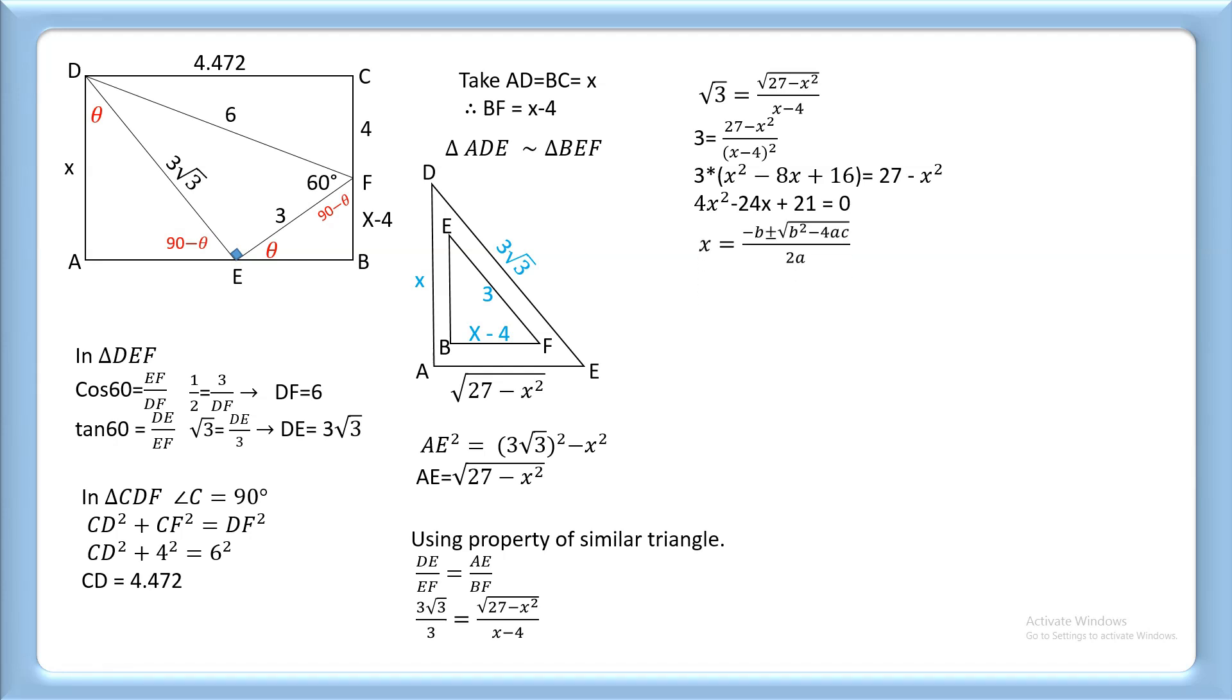Now using the quadratic formula, x = (-b ± √(b² - 4ac))/2a. Putting a = 4, b = -24, and c = 21, we get two solutions.